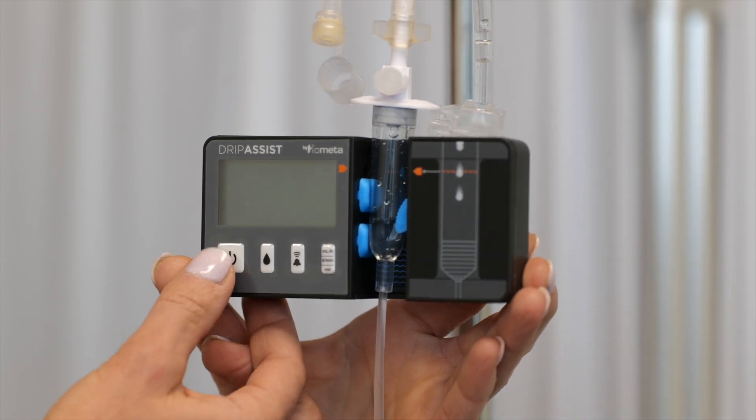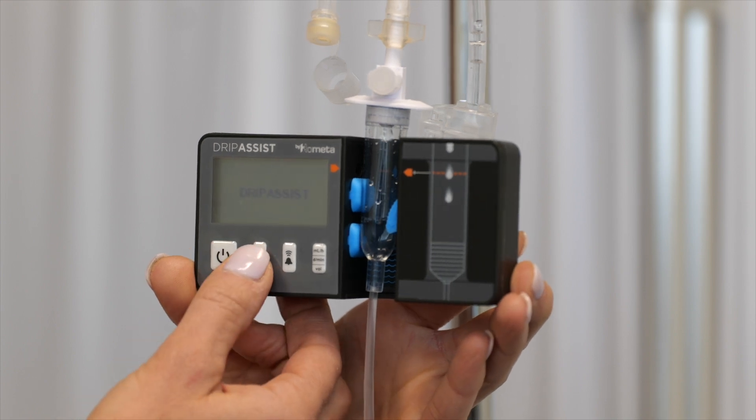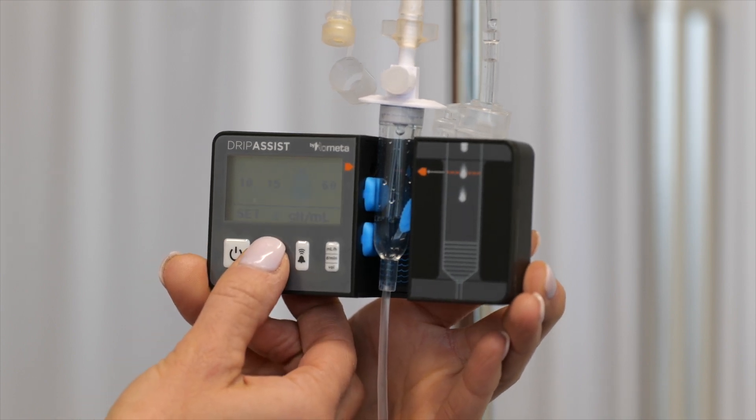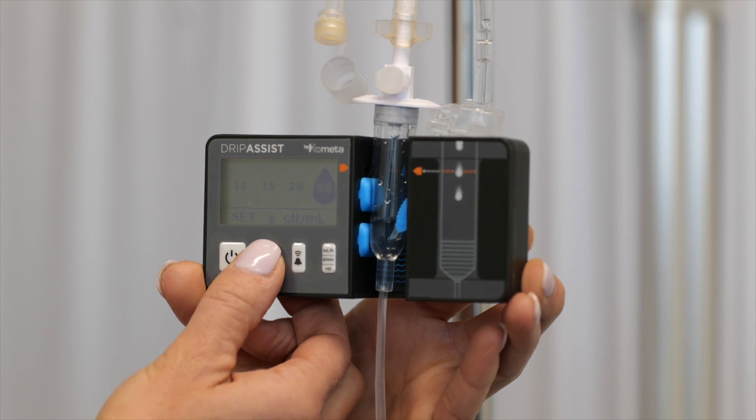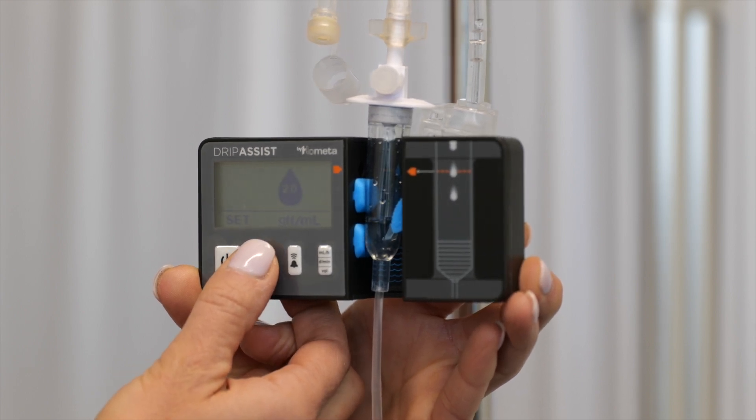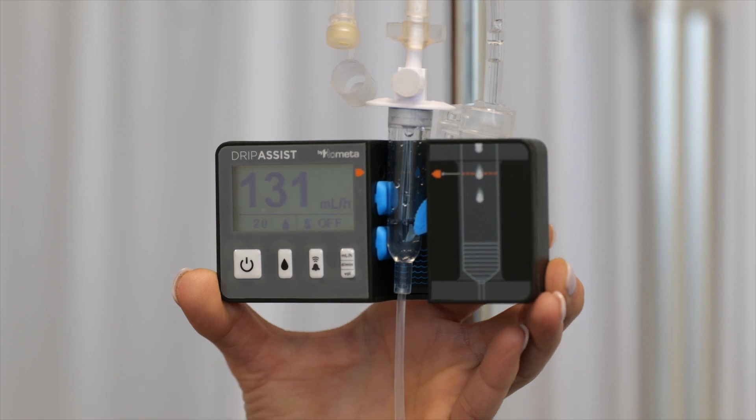Power the device on and push the drop factor button to toggle until you reach the drop factor of the set that you're using. When you've settled on the correct drop factor, release the button and the device will begin measuring and displaying the rate.